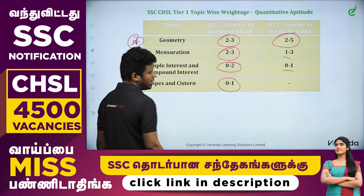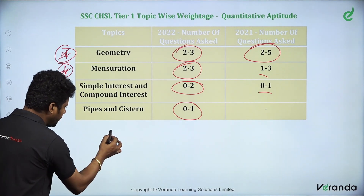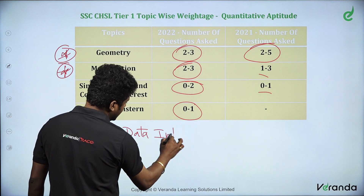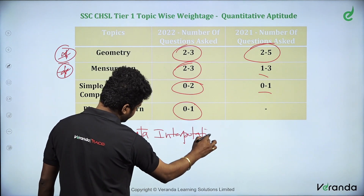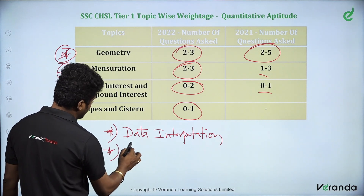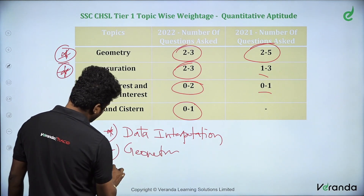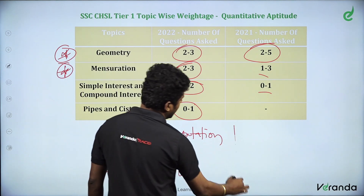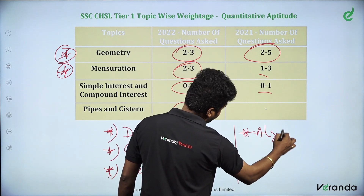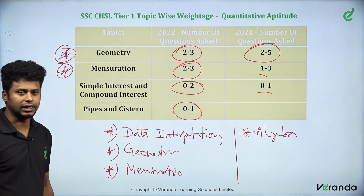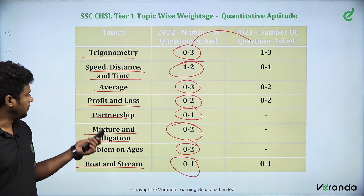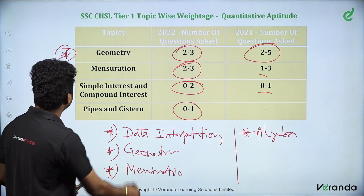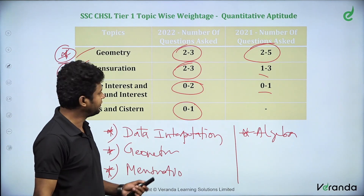So to summarize, the top 4 priority topics are Data Interpretation, Algebra, Geometry, and Mensuration. These four topics deserve the most time spent. You should learn all the topics, but focusing on Data Interpretation, Algebra, Geometry, and Mensuration will be definitely helpful.